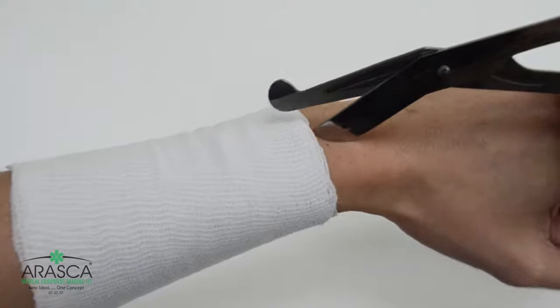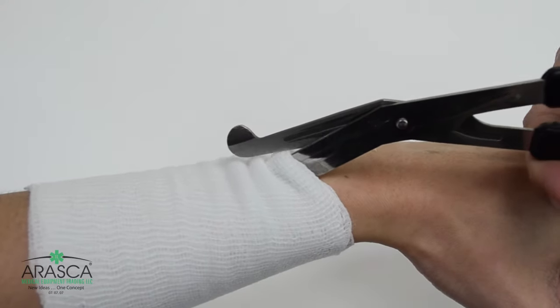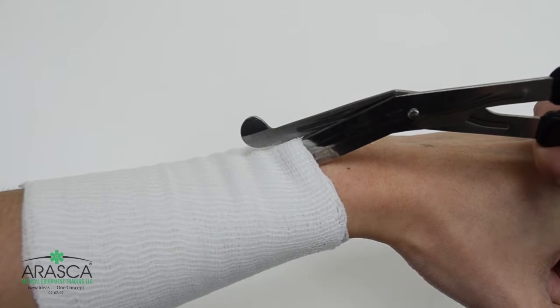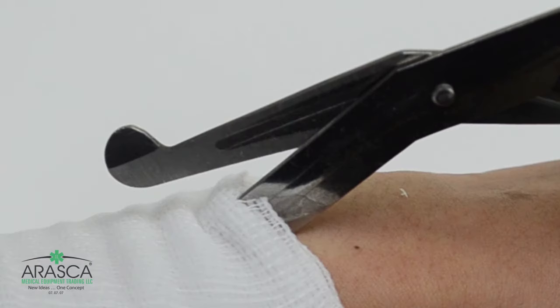Shears and scissors are used to cut bandages and tape. Some first aid scissors are designed to easily slide on bandages and prevent tearing of the patient's skin during treatment with their rounded edge.